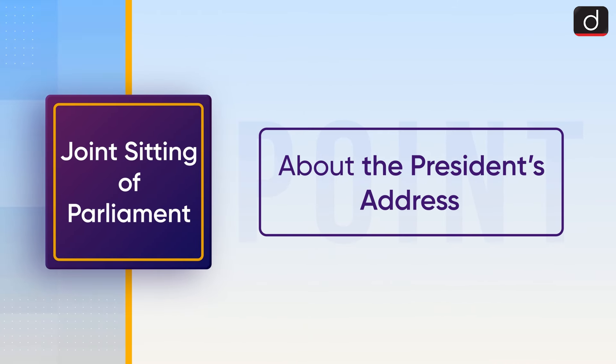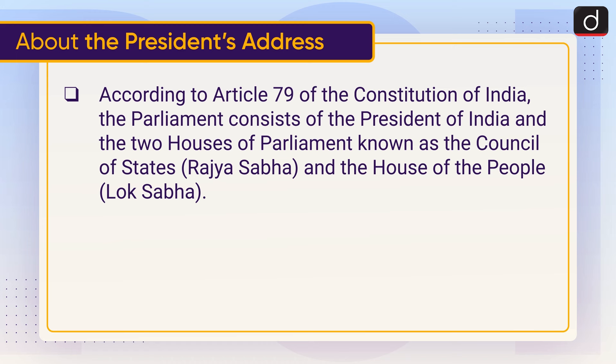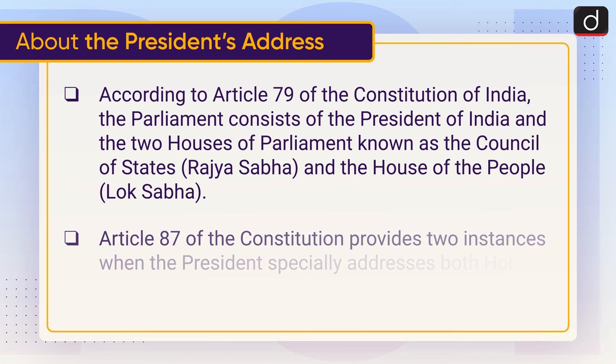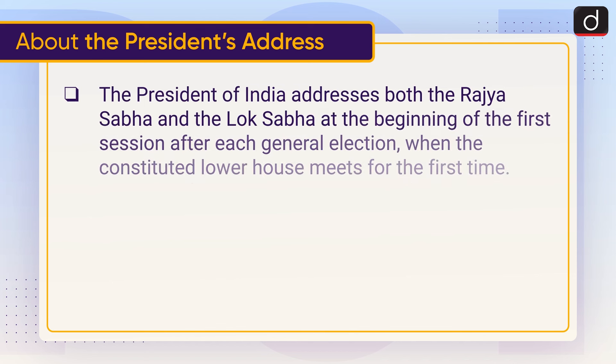Now let's discuss about the President's address. According to Article 79 of the Constitution of India, the parliament consists of the President of India and the two houses of parliament, known as the Council of States, that is Rajya Sabha, and the House of the People, Lok Sabha. Article 87 of the constitution provides two instances when the President specially addresses both houses of parliament.